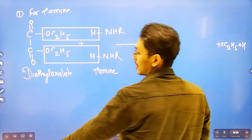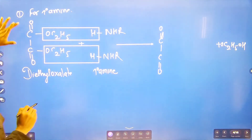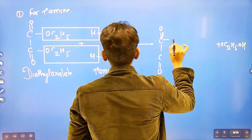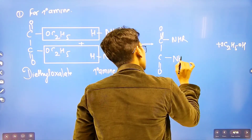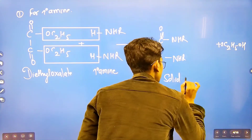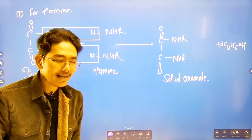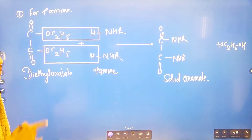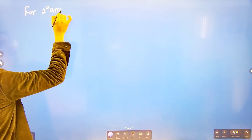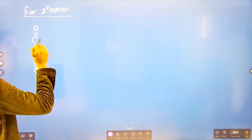After the reaction, what remains is a solid product. The solid product is called diethyl oxalamide — a solid oxamide. For secondary amine reaction, the secondary amine reacts with diethyl oxalate: C double bond O, O-C2H5, C double bond O, O-C2H5.